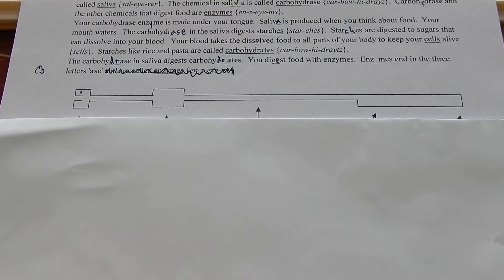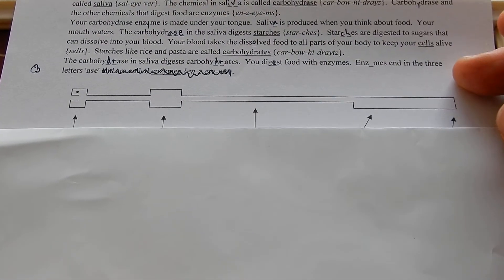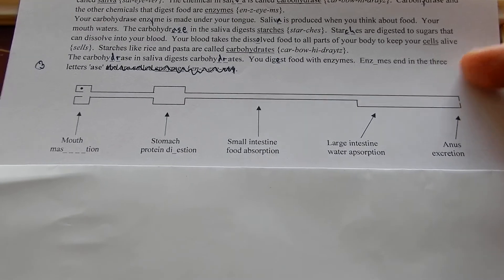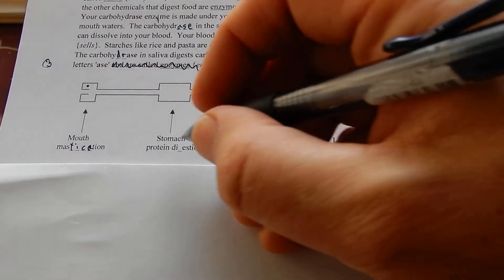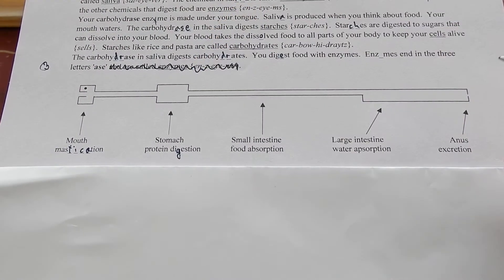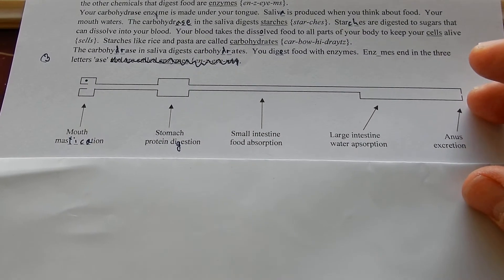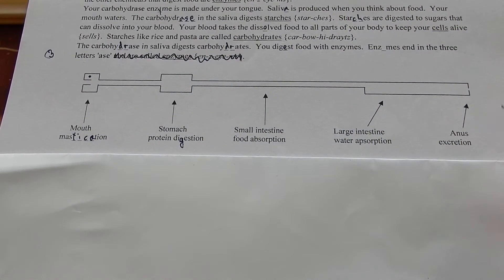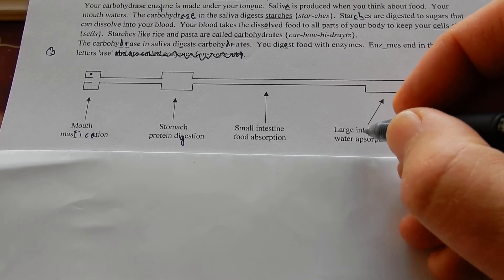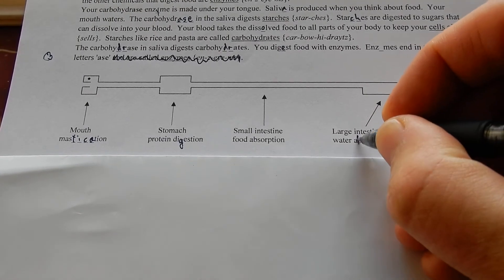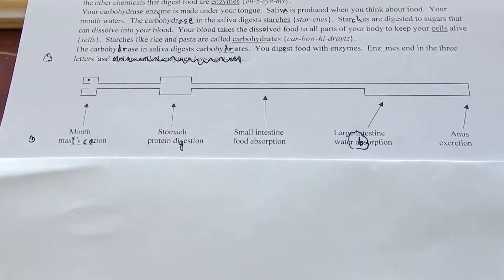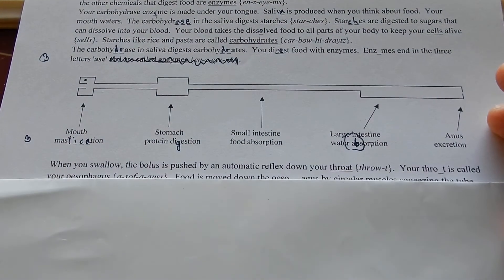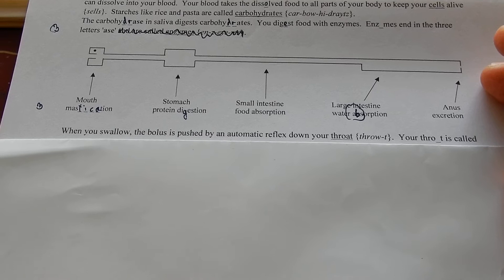You are a food tube. Your food tube is a bit more wiggly than that. There's your mouth for mastication. There's your stomach for protein digestion. Your small intestine for food absorption. Large intestine for water absorption. And the anus for excretion.